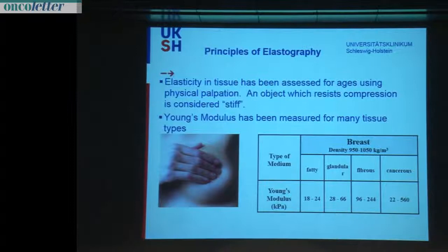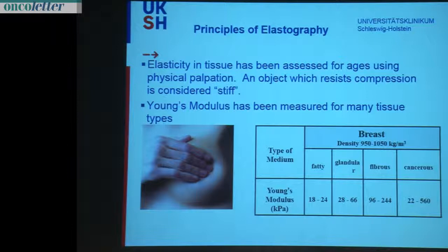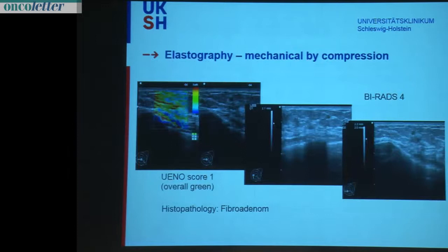The problem is that we know the different types of tissue in the breast have very different Young's modulus values. The fatty tissue has Young's modulus values of 18 to 24 kilopascal; glandular tissue up to 66 kilopascal; fibrous tissue up to 244. And then the problem comes: cancer varies between 22 and 560 kilopascal if you measure the stiffness.